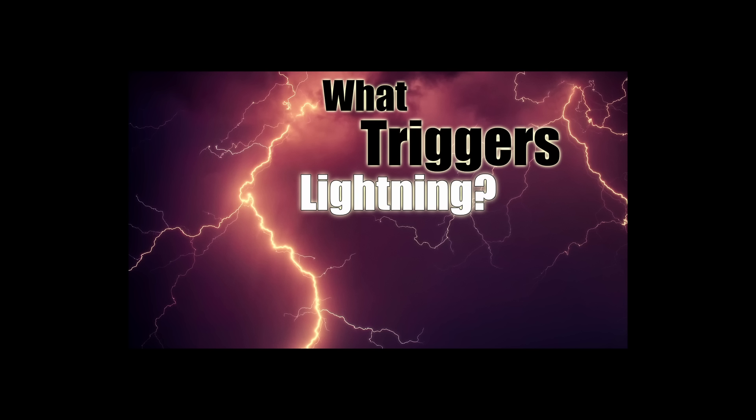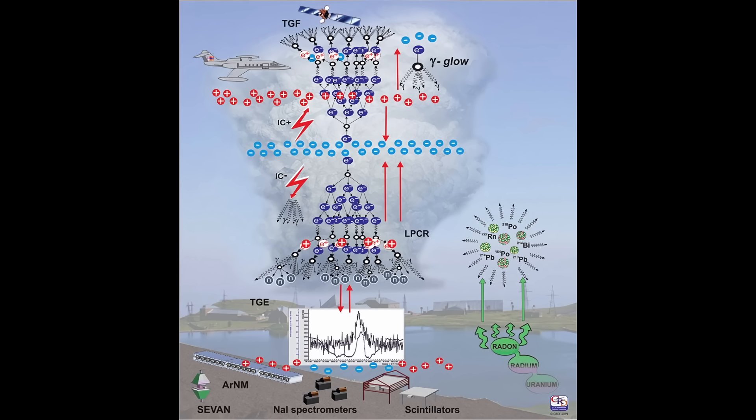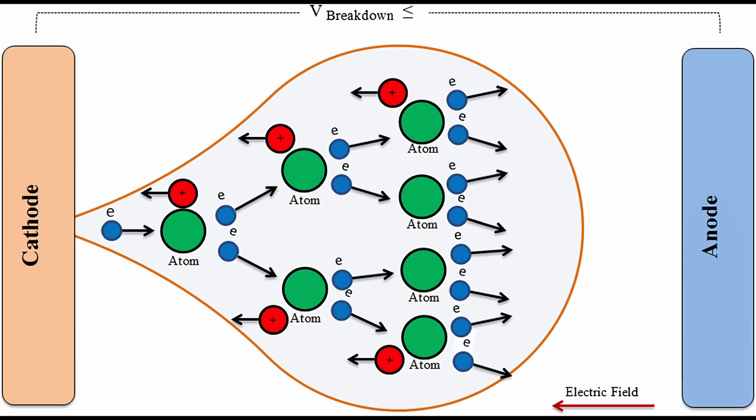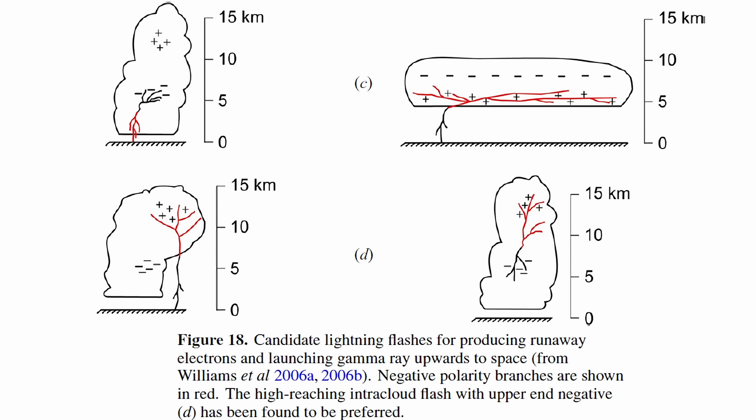We have previously delved into the core challenge of understanding lightning physics, specifically the initiation of a lightning flash. In our exploration, one intriguing hypothesis suggested that runaway electrons play a fundamental role in sparking the initiation of lightning. Observations, however, point to a fascinating nuance. A specific phase and polarity of lightning seems crucial for accelerating electrons into a runaway state. In simpler terms, certain types of lightning trigger runaway electrons, rather than the other way round.